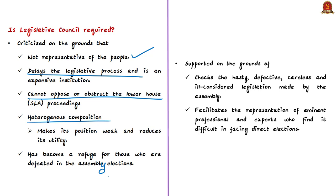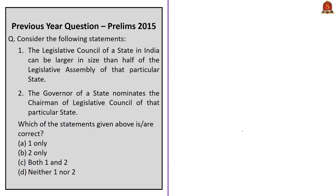On the other hand, the utility of the council is supported on two major grounds. First, it checks hasty, defective, careless, and ill-considered legislation by the state legislative assembly, which is considered the major utility of the upper house, achieved by providing for revision and deliberation. Second, it facilitates representation of eminent professionals and experts who could not face direct elections, achieved through the Governor's nomination of one-sixth of the members from fields such as literature, science, art, cooperative movement, and social service.